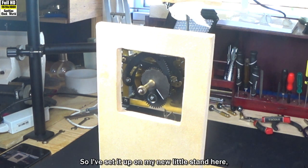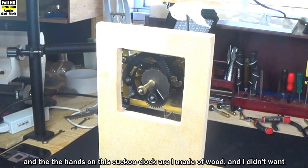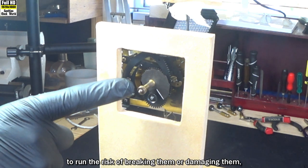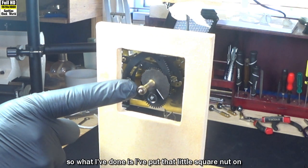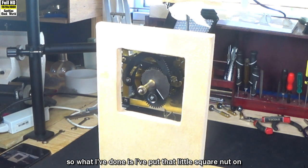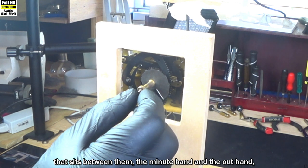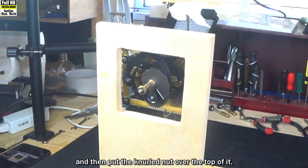The hands on this cuckoo clock are made of wood and I didn't want to run the risk of breaking them or damaging them, so what I've done is I've put that little square nut on that sits between the minute hand and the hour hand, and then put the knurled nut over the top of it.